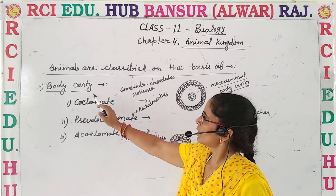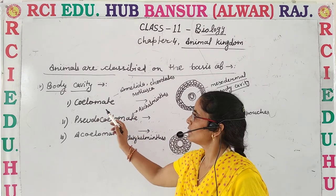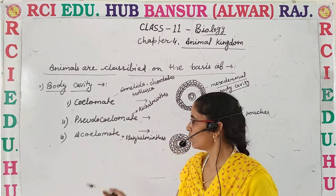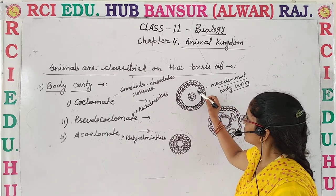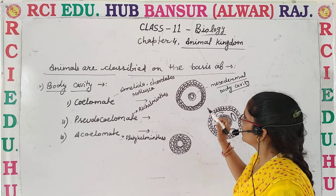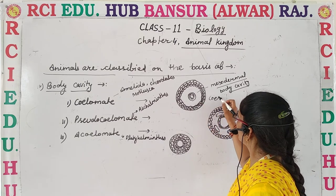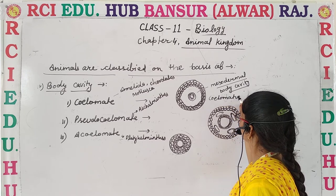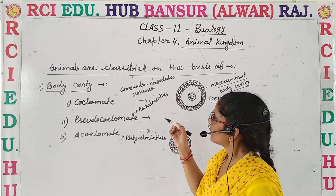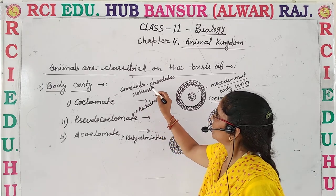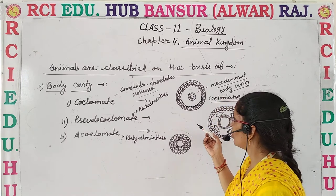On the basis of body cavity, organisms are divided into three categories: coelomate, pseudocoelomate, and acoelomate. When the body cavity is surrounded by mesoderm, that is known as coelomate, or the organism has a coelomic body cavity. The organisms which come under this category are Annelida, Chordata, and Mollusca — they all are coelomate.